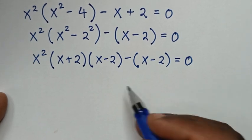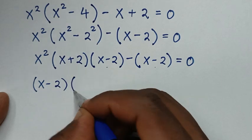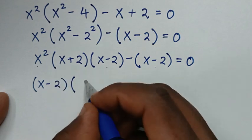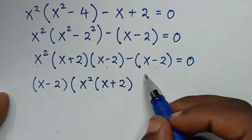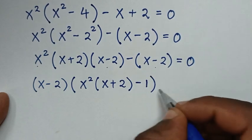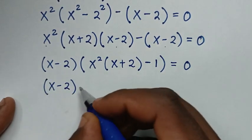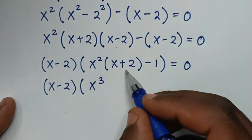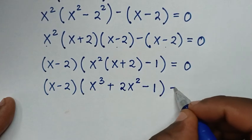From here, (x - 2) is common, so we take (x - 2) out of the bracket. Dividing by (x - 2): x²(x + 2) minus 1. So we get (x - 2)[x²(x + 2) - 1] = 0. Expanding: (x - 2)[x³ + 2x² - 1] = 0.